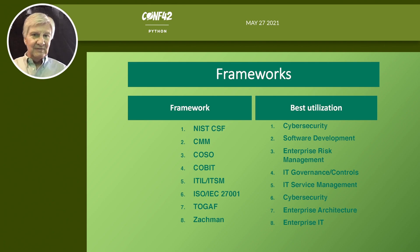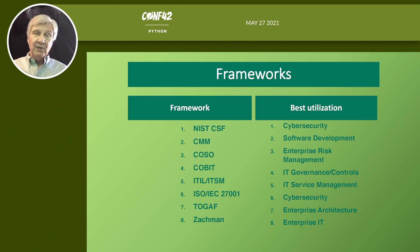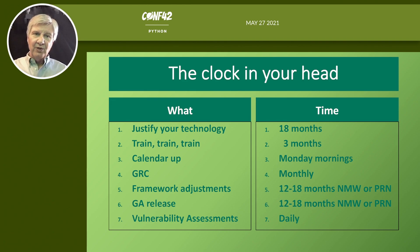Frameworks to choose from: the Cybersecurity Framework (CSF) for cybersecurity, CMM for software development, COSO for enterprise risk management, COBIT for controls, ITIL/ITSM for IT operations, ISO/IEC 27000s for cybersecurity, TOGAF, and others. Find one that works for you — in the U.S. you'll likely look at NIST; in Europe or Asia, an ISO standard. They all look about alike at the nuts and bolts level. But make sure you've got a standard.